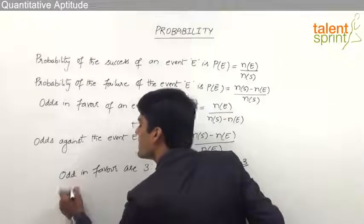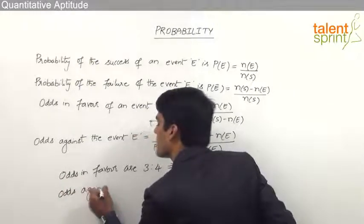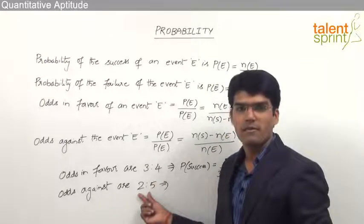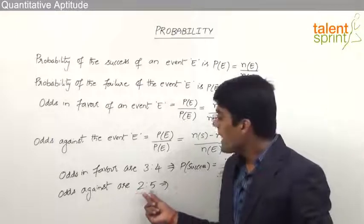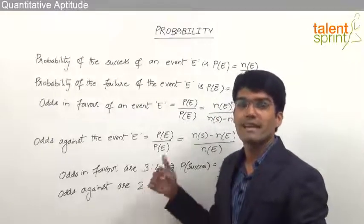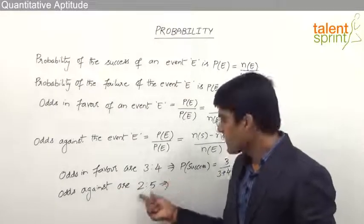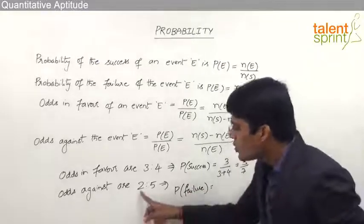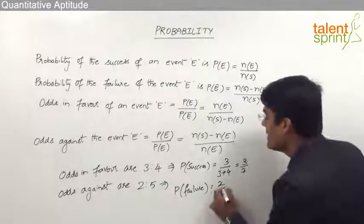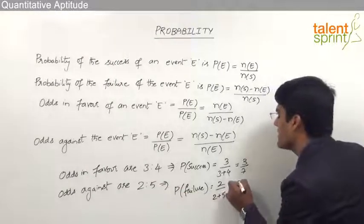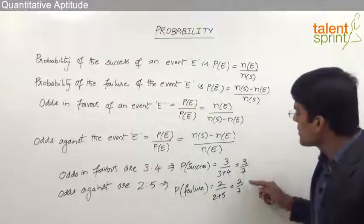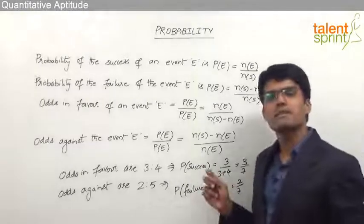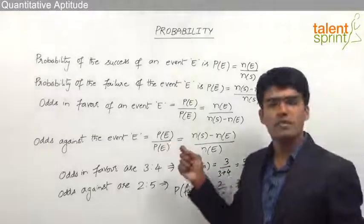Likewise, if the odds against a particular event are given as 2:5, then 2 represents the number of outcomes not in favor and 5 represents the number of outcomes in favor — because these are odds against, showing unfavorable to favorable outcomes. So the probability of failure is 2 divided by the total 2 plus 5, which is 2/7. Once we know the probability of failure is 2/7, the probability of success is 1 minus 2/7, which equals 5/7.